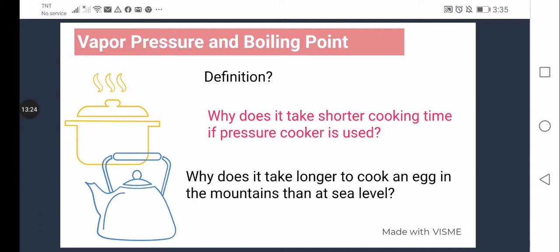Next question. Why does it take longer to cook an egg in the mountains than at sea level? Well, at high altitudes, the external pressure is decreased. Therefore, less energy is needed for the water molecules to bounce upwards to escape into the atmosphere. With that, water boils at a lower temperature and thus, longer time is needed to cook the egg.